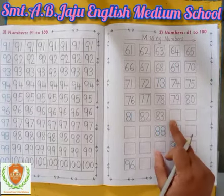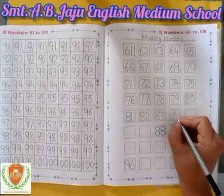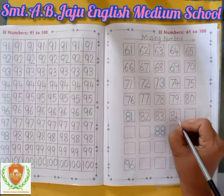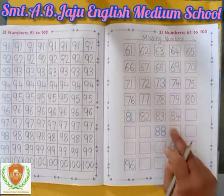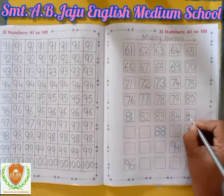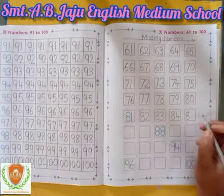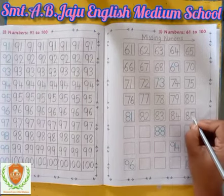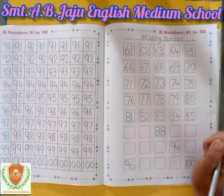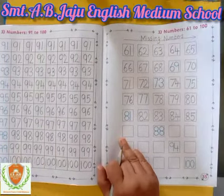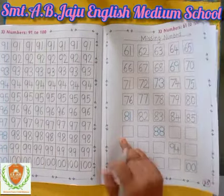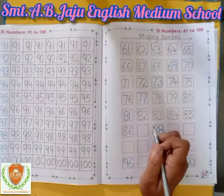After 83, which number will become? 84. After 84, which number will become? 85. First write down 8, then write down 6. 86.